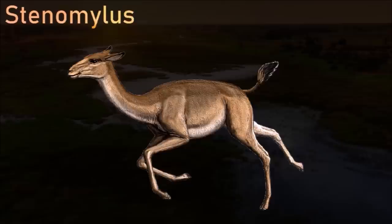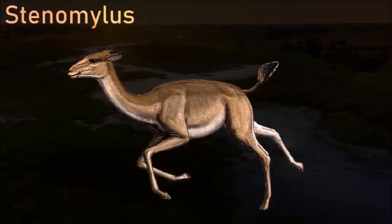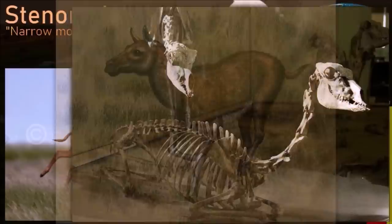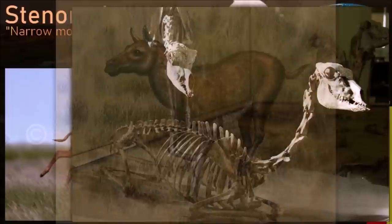Stenomylus was a humpless camel that lived in North America between the late Oligocene and the early Miocene. Although it was a true camel, it was small, reaching only 1.5 meters tall at the shoulder. Its legs and body were delicate and slender, like those of a modern gazelle. Its most remarkable features were its elongated, high-crowned molars with deep roots that reached the base of the jaw and the top of the skull, showing signs of extreme wear during the life of the animal.